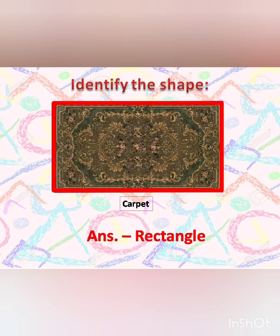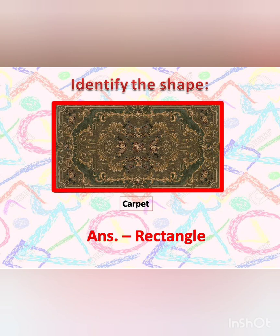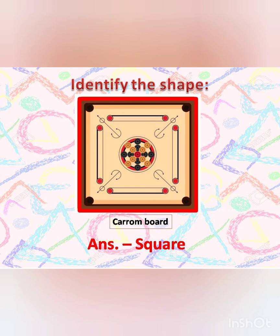It has four sides, out of which the opposite two sides are equal. Now let's have a look at the next one. Our next object is a carom board. How many sides does this carom board have? Four. Great. Aren't all the sides equal? Yes, they are. Then think — identify the shape. The answer is square. Four sides and all are equal.